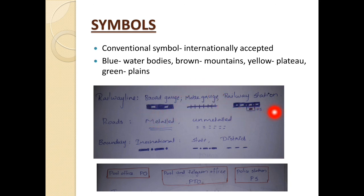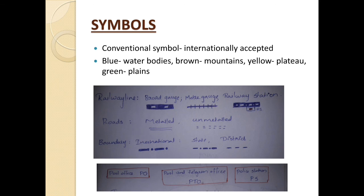For metal roads, two straight lines are used, and for unmetal roads, two dashed lines are used. For a post office, PO is used as a symbol; for a post and telegram office, PTO is used; and for a police station, PS is used. There are various conventional symbols — you can see them in your NCERT textbook.